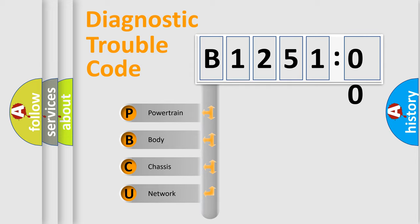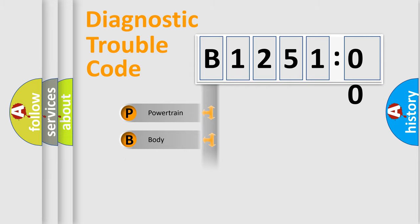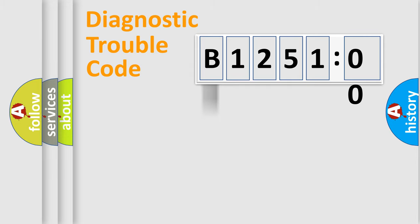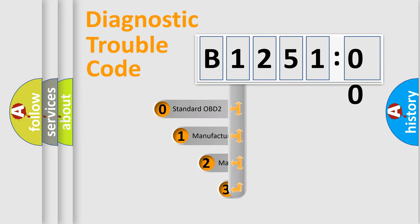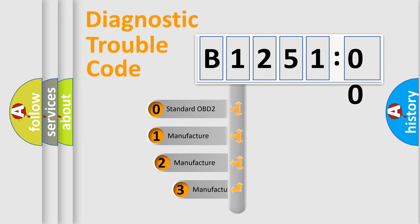We divide the electric system of an automobile into four basic units: Powertrain, Body, Chassis, and Network. This distribution is defined in the first character of the code.